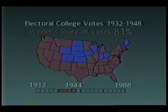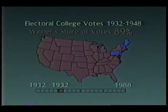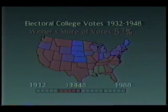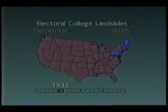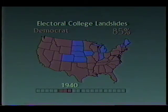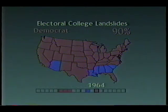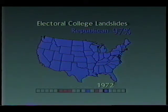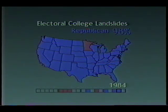Now we brush the series to display the longest continuous sequence of victories by candidates of a single party. Here again we brush the series to highlight elections in which candidates garnered more than 85 percent of electoral votes. Depending on the criterion used to select subsets of the data, brushed sequences may be consecutive or not.